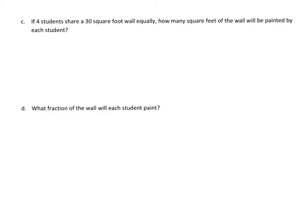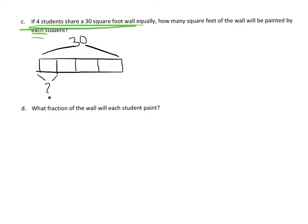So this is kind of a continuation of that previous problem, but we're moving on to new numbers. It says if 4 students share a 30 square foot wall equally, how many square feet of the wall will be painted by each student? So our model, our tape diagram, here is our tape diagram, and here's our 30 square feet. And we have, again, 4 students. So we're going to chop that up into 4 equal parts. And we want to know one unit. How much is one unit worth?